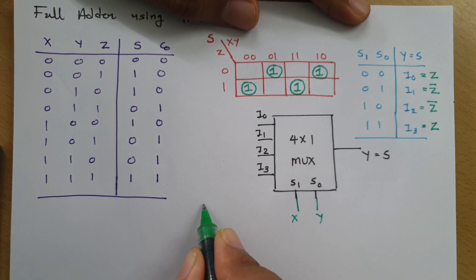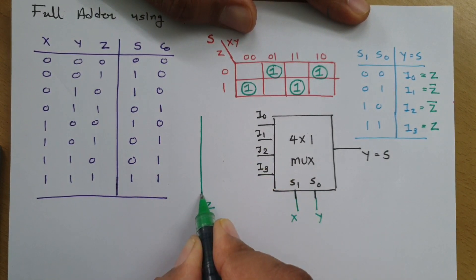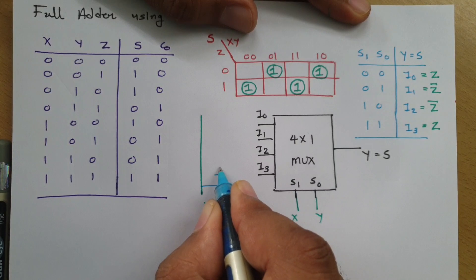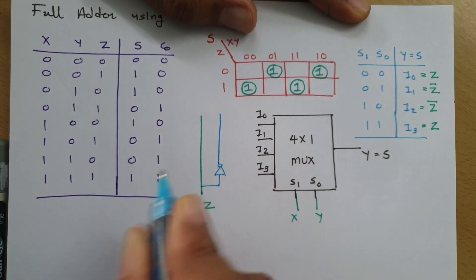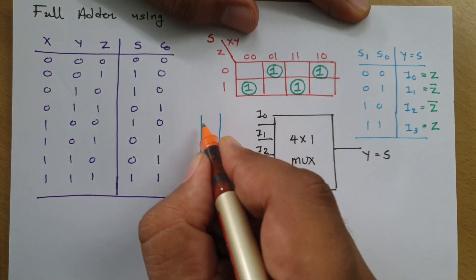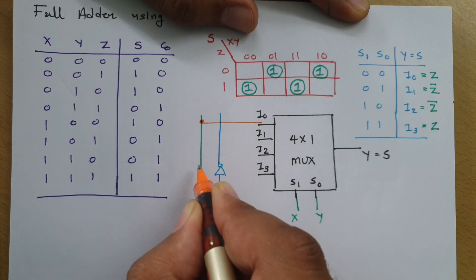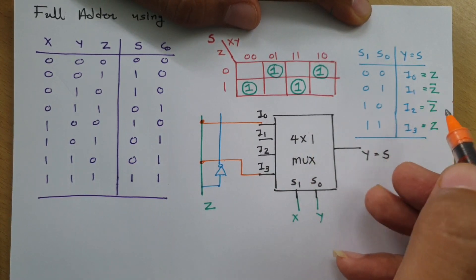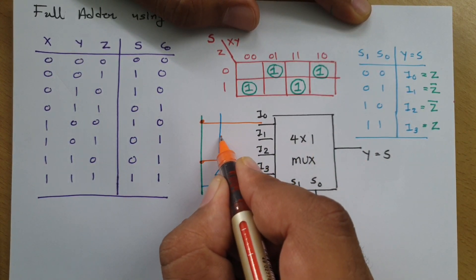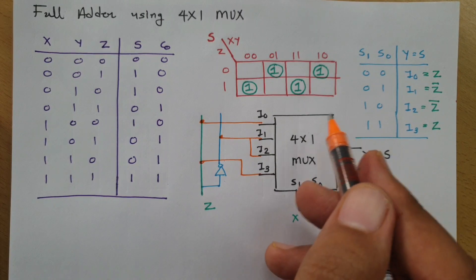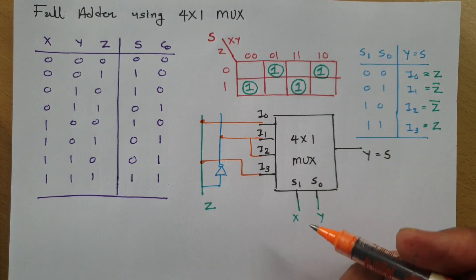If we have an active-high z line and an active-low z-bar line, the connections are: I0 and I3 connect to z, while I1 and I2 connect to z-bar. This is how we implement the sum function using a 4x1 multiplexer.